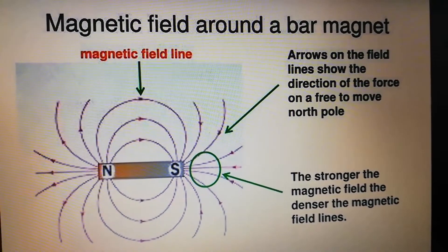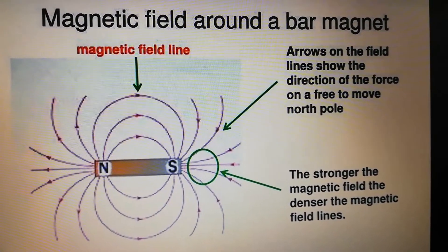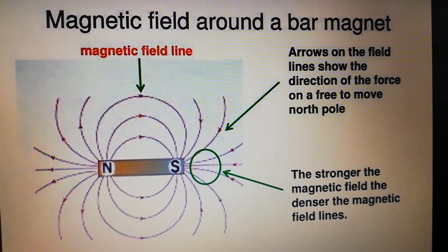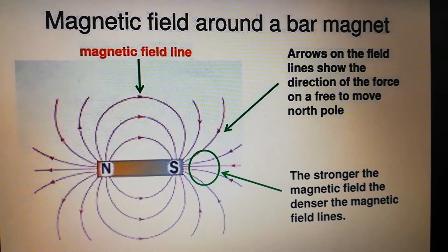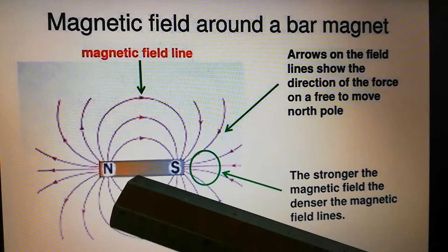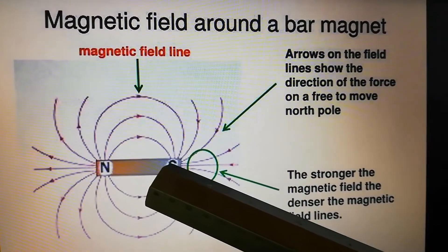The magnetic field around a bar magnet. Outside the bar magnet, the direction of the magnetic field is from north to south.